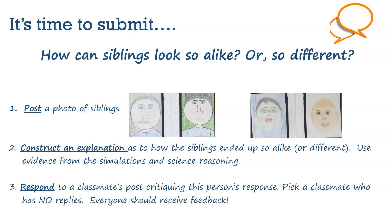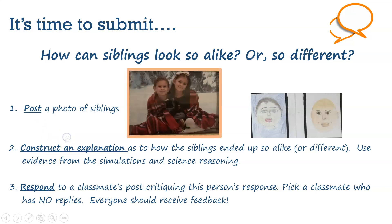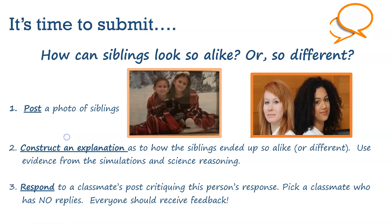Once you post the picture to the discussion board, also make sure to construct an explanation as to how these two siblings came out so alike or different. If you can explain how this happened for our simulation, it's easy to understand why my children look so alike or why those twins we saw in the very beginning of the unit look so different — you'll be able to explain so many different genetic phenomena. I would recommend constructing a thoughtful explanation on your journal slip first and then going to the discussion board.